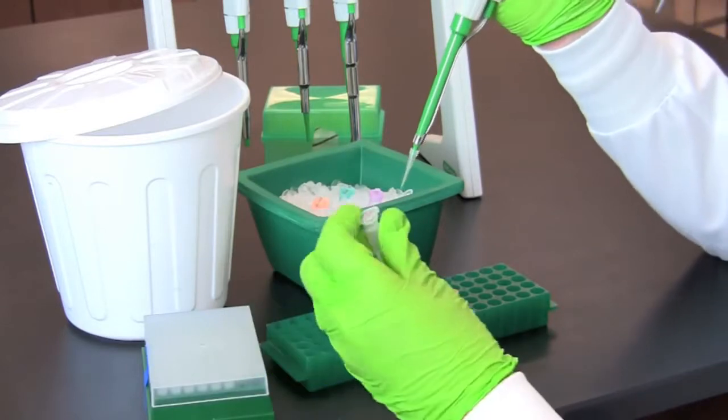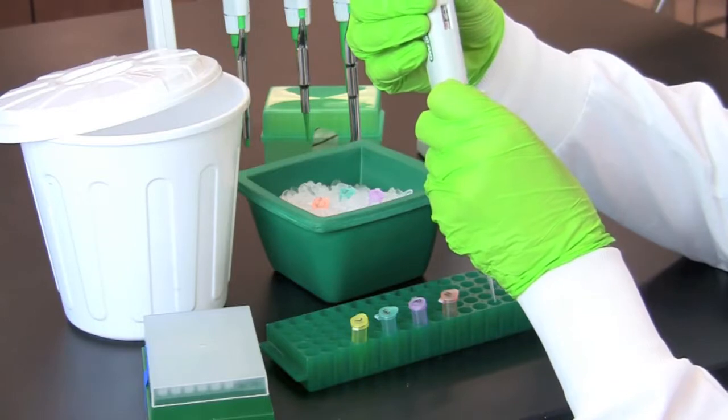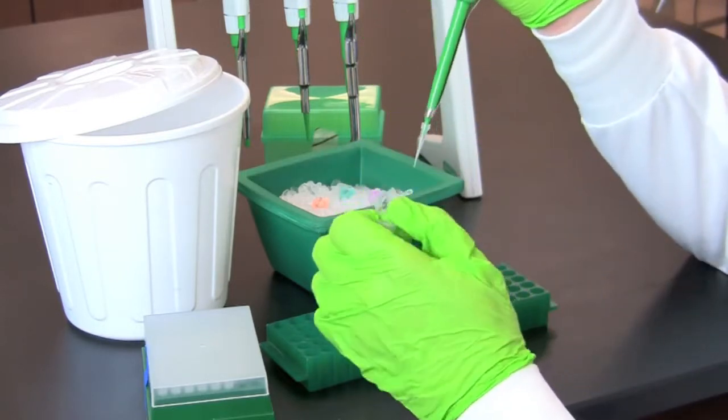Again, using a fresh tip, reset your micropipette to transfer five microliters of 2X restriction buffer to the color-coded tube labeled E.